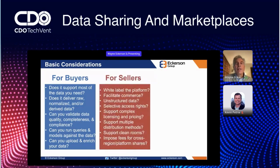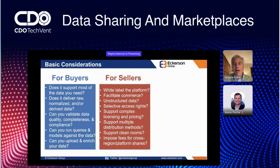For sellers: can you white-label the platform so it looks and feels like your own? Does it facilitate commerce inside and outside of the platform? Does it support unstructured and semi-structured data? To what degree can sellers select who can access each product — so that's blacklisting and whitelisting. Does it support complex licensing and pricing models, multiple distribution methods, clean rooms? Does it impose fees for cross-region, cross-platform, cross-database sharing? That's something that Snowflake and Databricks are duking out right now.